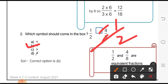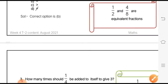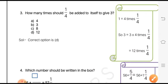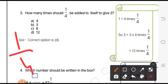Question number 3 is: how many times should 1 by 4 be added to itself to get 3? That means we have been asked how many times should we add 1 by 4 to itself to get the sum 3. In other words, we have been asked to repeatedly add 1 by 4.